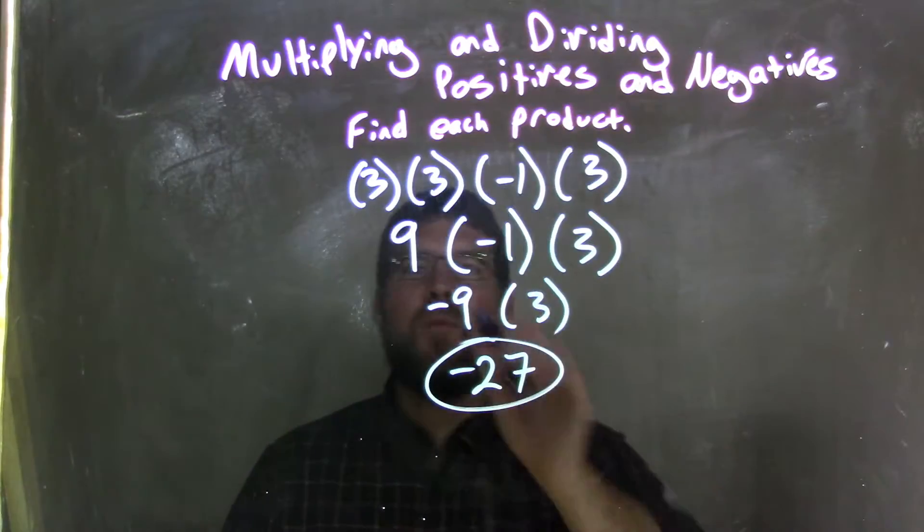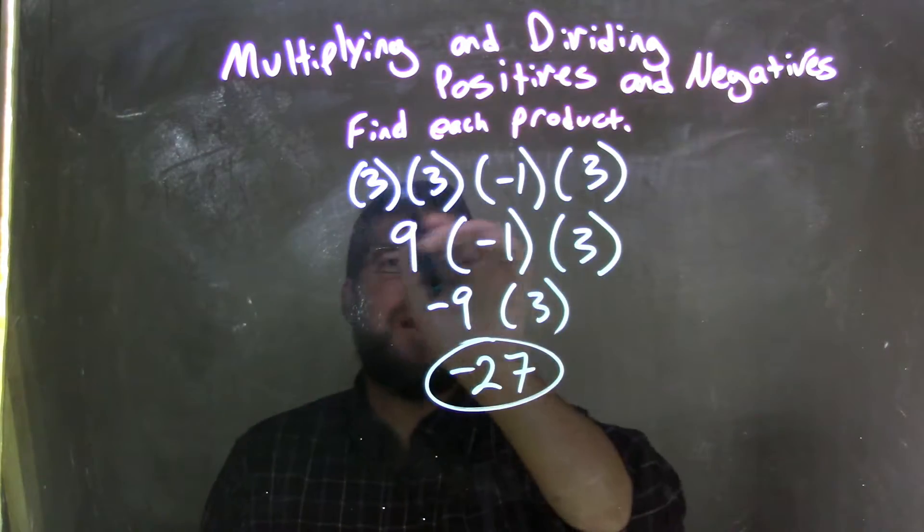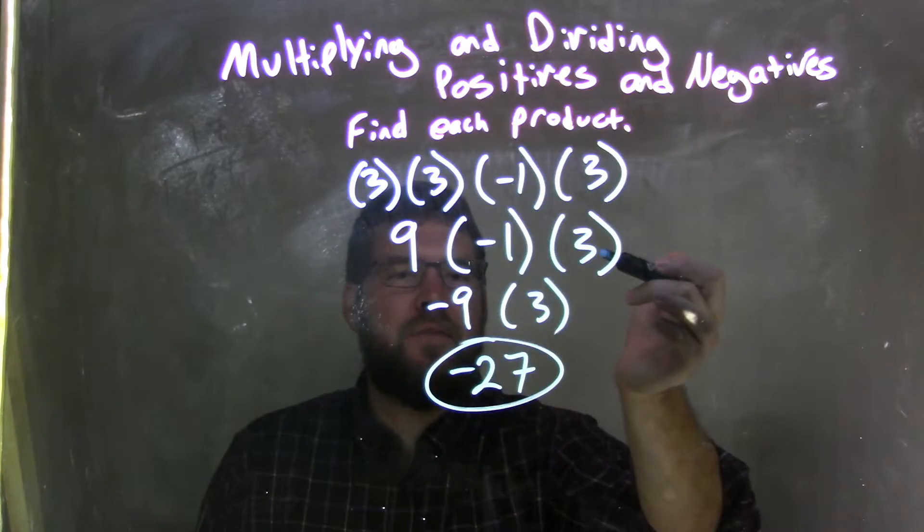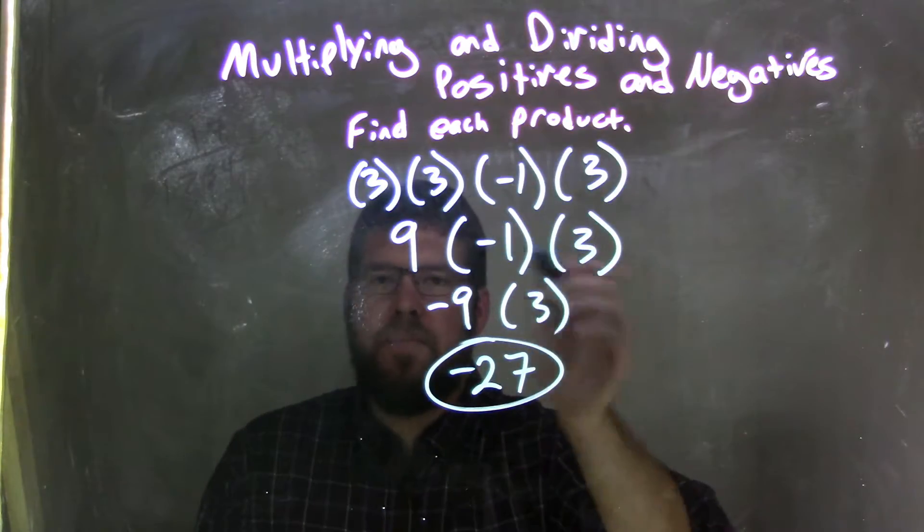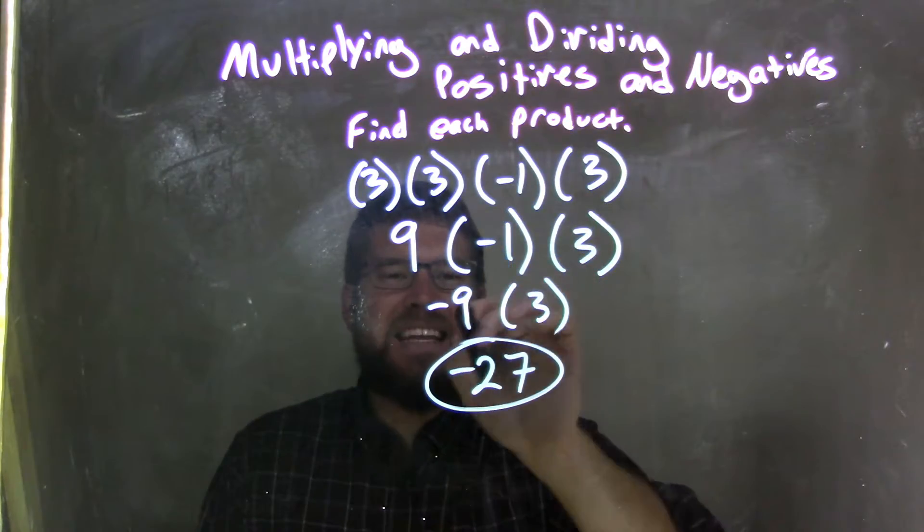So again, let's recap. We started with 3 times 3, which became 9. We brought down a negative 1 and a positive 3. But it's still all multiplication. 9 times negative 1 is negative 9. A positive times a negative is a negative.